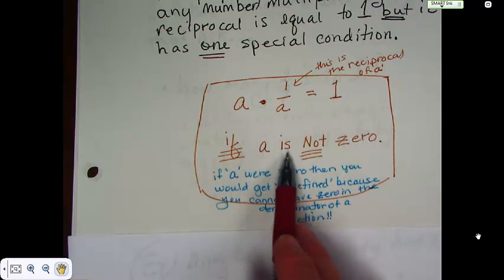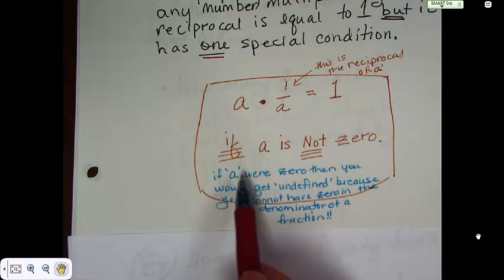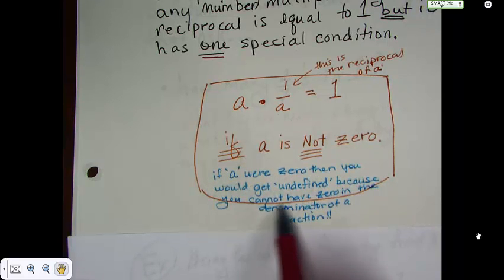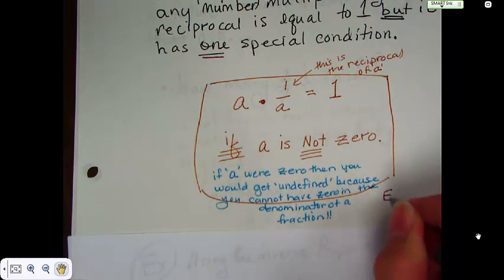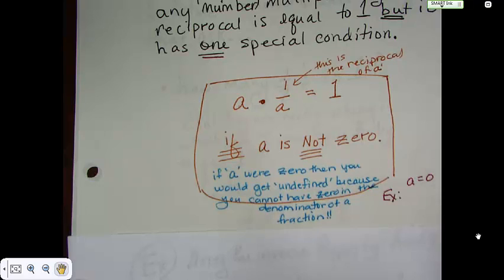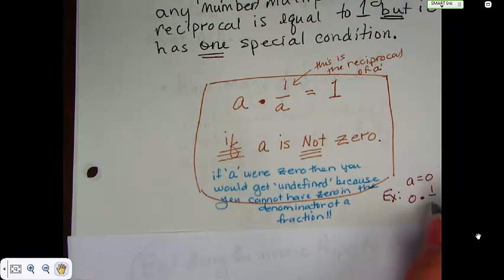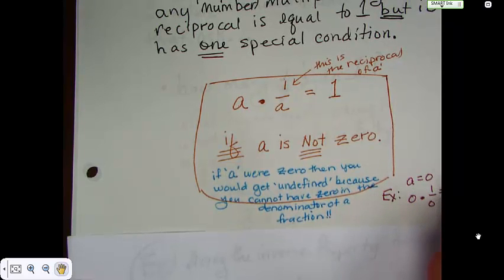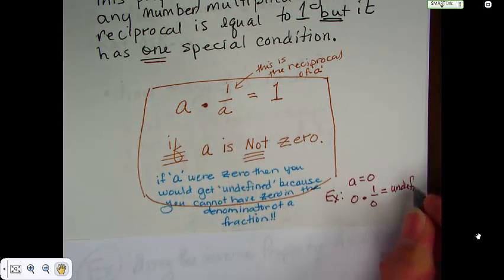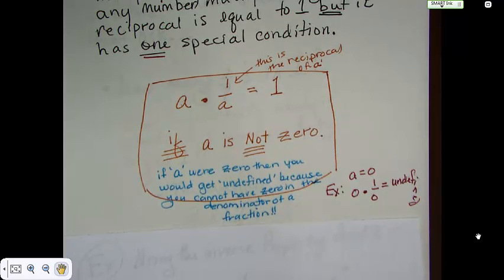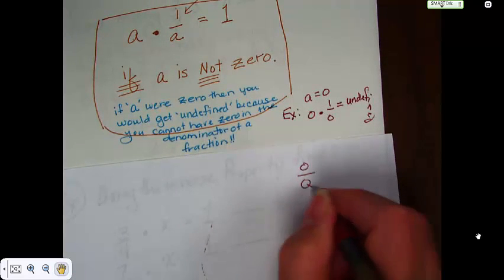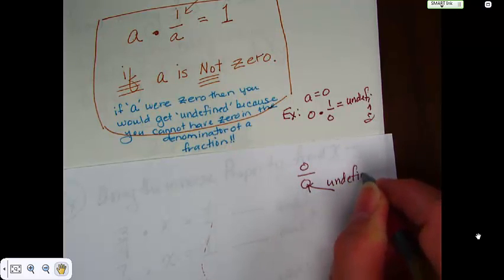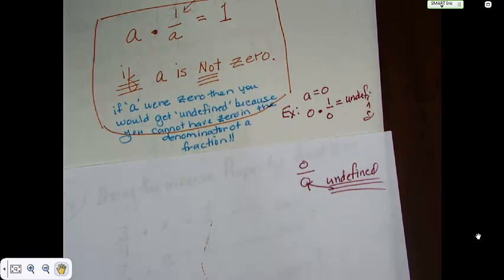Okay. You can take a times 1 over a which is reciprocal and get 1. If and only if a is not 0. Okay. So, if a were 0, then you would get an undefined because you cannot have 0 in the denominator of a fraction. So, if a were 0, folks, here's your example. If a equaled 0, then you'd have 0 times 1 over 0. And the answer to that is undefined. Okay. You can't do that. You can't have a 0 in the denominator because what you'd end up with would be 0 over 0. And this part right there is the undefined part. You can't have it. I've never seen a 0 in my life and I never, never, never, never, never hope to.